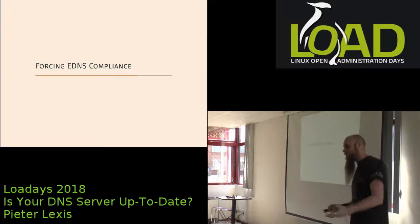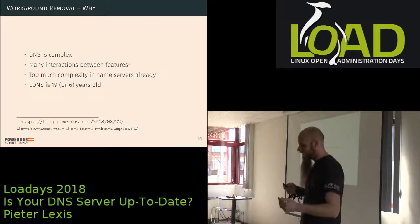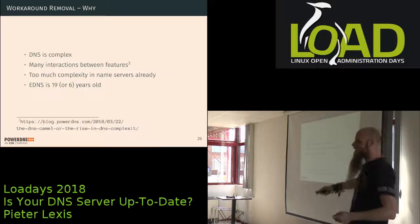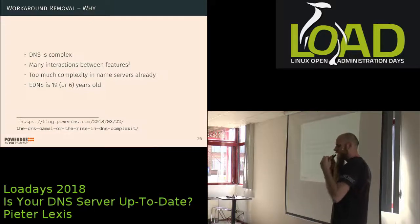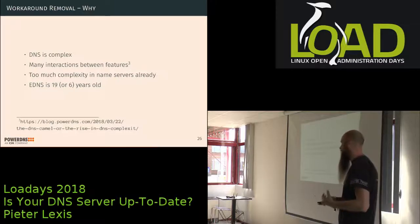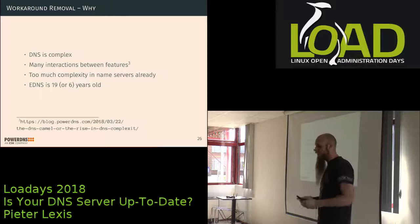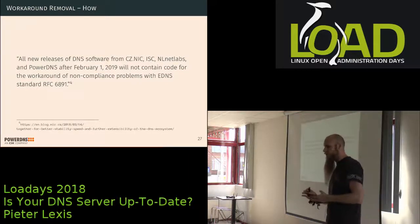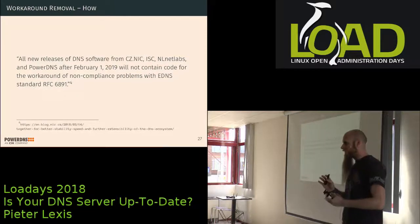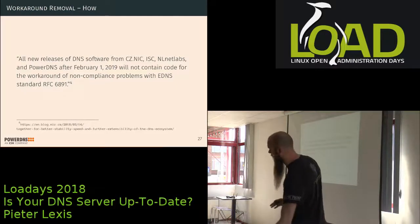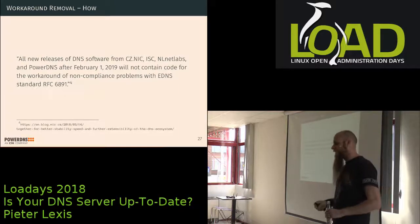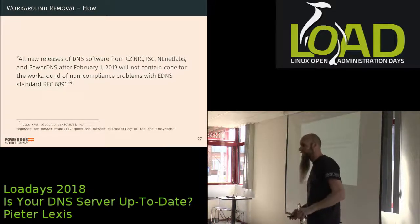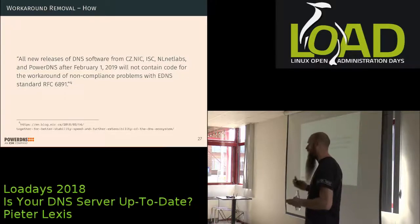So how are we as open source vendors going to force EDNS compliance? DNS is complex, there's too much interaction between features, and EDNS is 19 years old — or six years from the latest RFC. Together with the guys from CZ.NIC, ISC, and NLnet Labs, we have decided that starting February 2019, all releases from our recursive products will not contain any of these EDNS workarounds anymore. That means some domains might go dark or be slow. We reach out to you — the people who run these domains — to tell you what you can do to fix this.